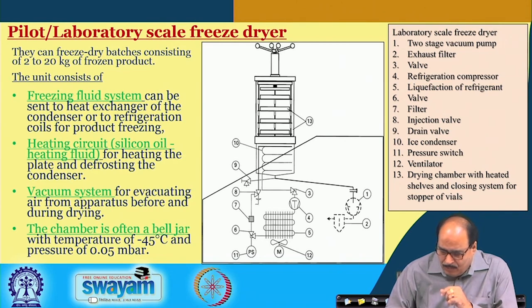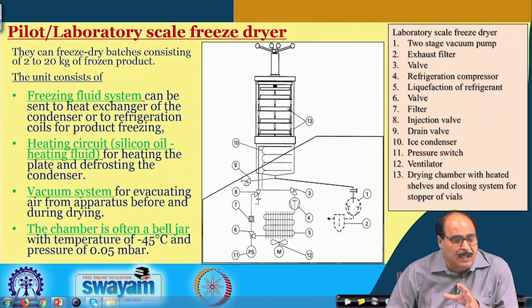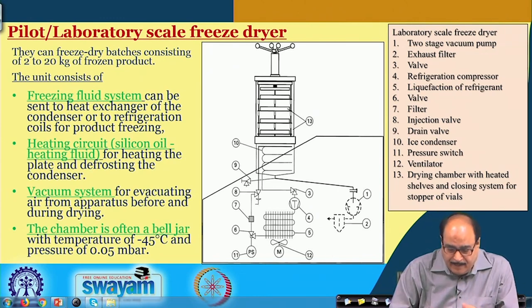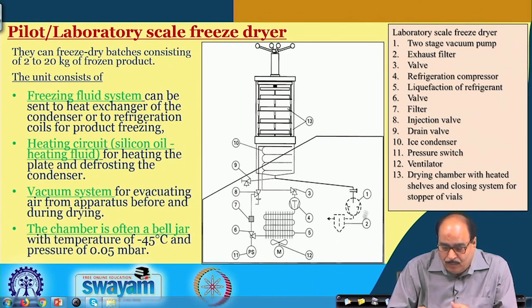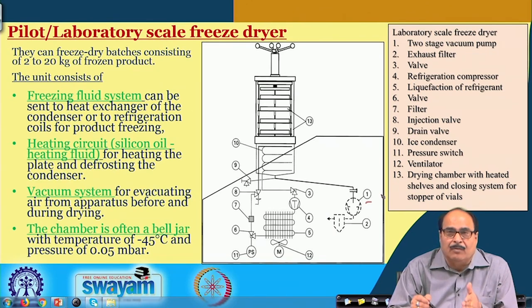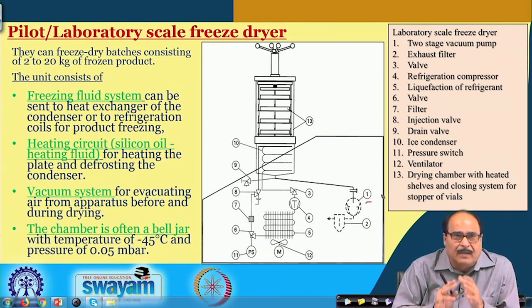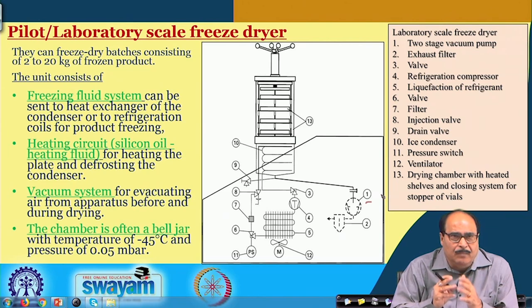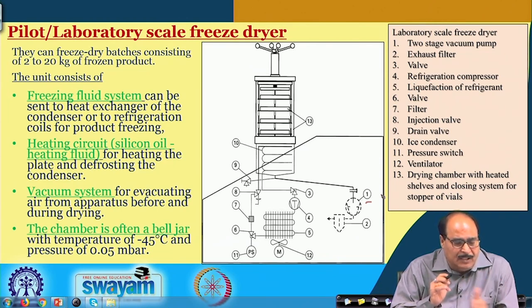In this figure we have shown you the schematic of the laboratory scale or pilot scale freeze dryer. You can see the different components highlighted. It has a two-stage vacuum pump, exhaust filter, valves, and so on. The pilot scale or laboratory scale freeze dryers have a capacity of about 2 to 20 kg of frozen products. The system consists of a freezing fluid system which can be sent to a heat exchanger of the condenser or to the refrigeration coil of the product for freezing.